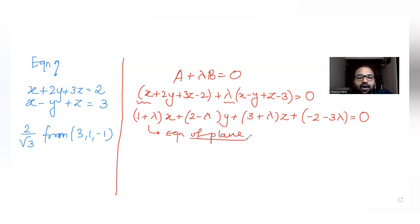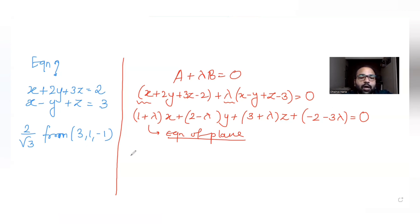If I know the value of λ, I can substitute it to get the required equation of the plane. To find λ, we use the idea of the distance given to us from the point (3, 1, -1). The distance is given as 2/√3, which equals the distance formula expression.